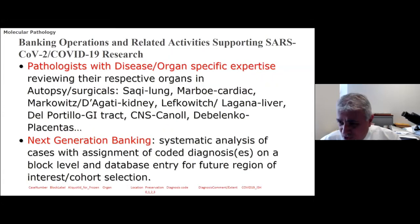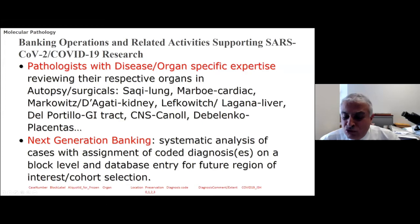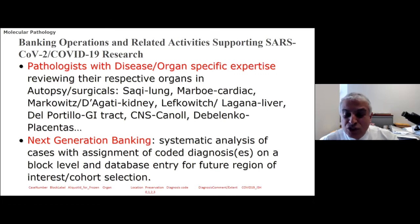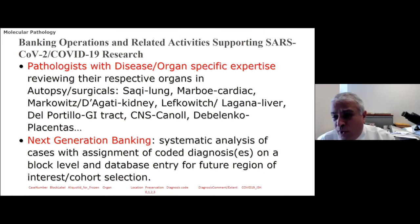We work with a team of pathologists — you've seen them today describing organ findings, reviewing each organ in both autopsies and surgicals, and you can see their names here. We are creating a next-generation banking approach. In next-generation banking, we systematically analyze what we capture in the bank. Each organ or disease-specific expert is asked to create a list of coded diagnoses — maybe 10 diagnoses per organ — which can be imported into our database, making it easily searchable for individual conditions at a block and case level. For example, if an experiment requires DAD or microthrombi, we can immediately identify which block is relevant, alone or in combination with any other condition.